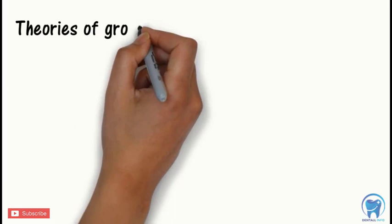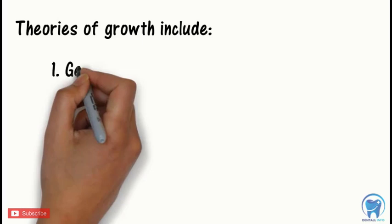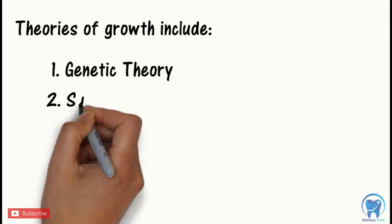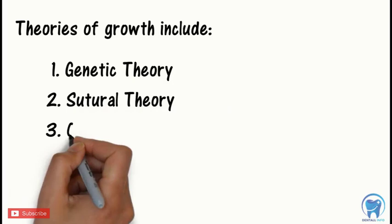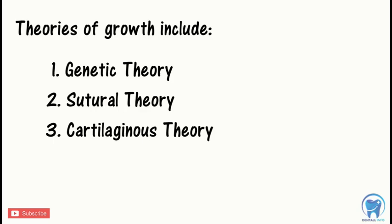First theory is the genetic theory. Second is the suture theory. Third is the cartilaginous theory. And fourth is the functional matrix theory.